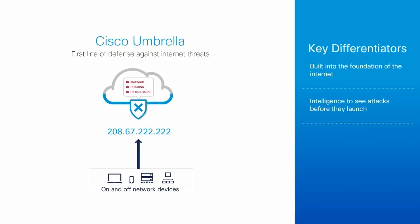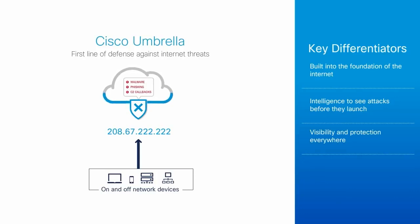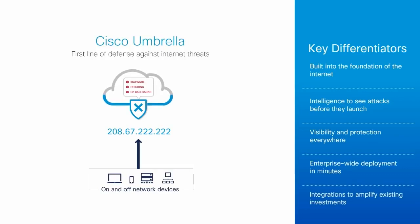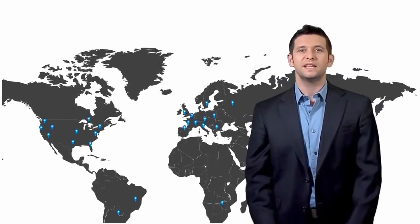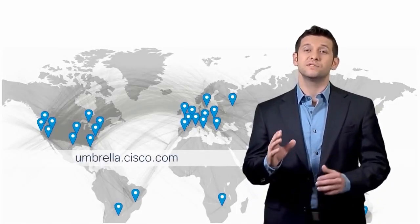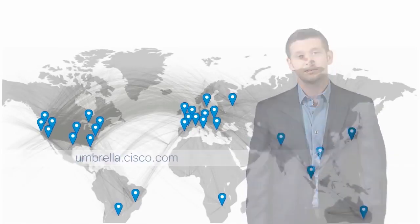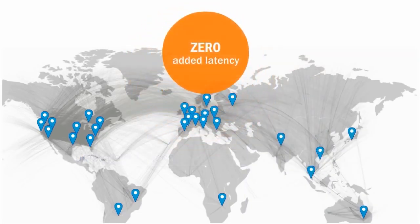Because Umbrella is built into the foundation of the internet and delivered from the cloud, it provides complete visibility into internet activity across all locations and users. Plus, it's one of the simplest security products to deploy and manage. Cisco Umbrella truly is built into the foundation of the internet. We have 25 data centers worldwide, and we peer with over 500 of the top internet service providers, or ISPs, and content delivery networks, or CDNs, to exchange BGP routes and ensure we're not adding more latency over regional DNS providers.